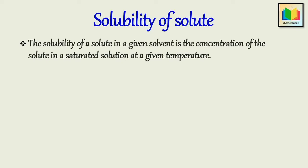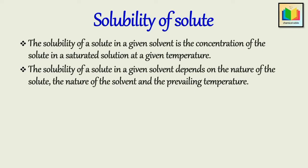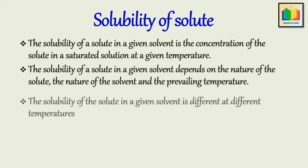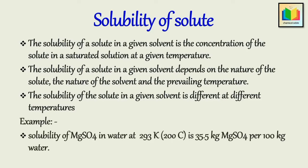The concentration of a solute in a saturated solution is called the solubility of the solute in the solvent. The solubility of a solute in a given solvent depends on the nature of the solute, the nature of the solvent, and the prevailing temperature. But solubility mainly depends on temperature. Solubility data are generally given in terms of parts by weight of anhydrous solute material per 100 parts by weight of the solvent. For example, the solubility of MgSO4 in water at 293 K is 35.5 kg MgSO4 per 100 kg water.